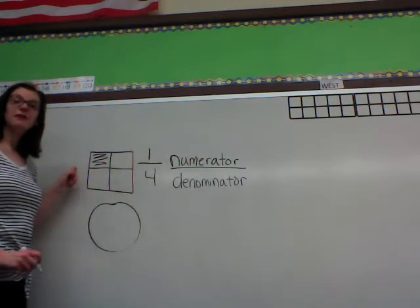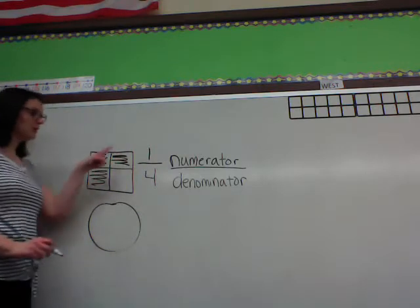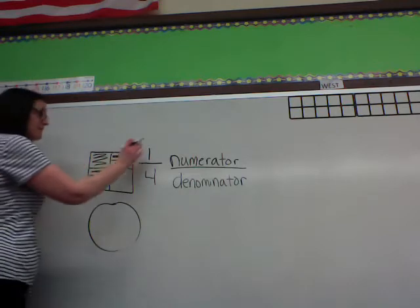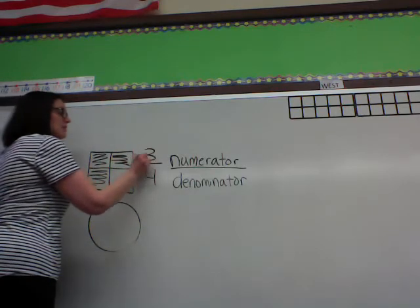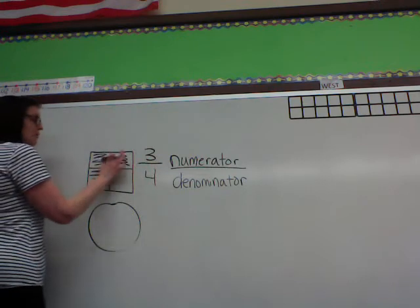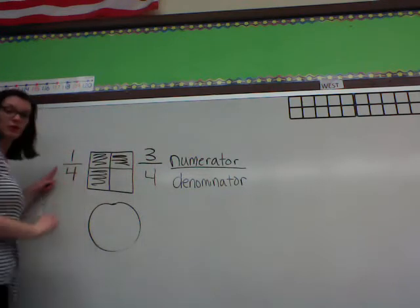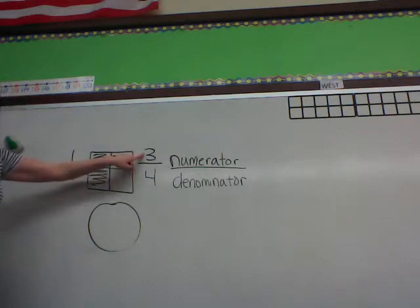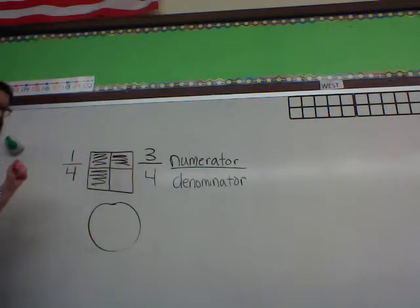But if I go ahead and color in two more, what number is going to be my numerator? Three. So I can either have one fourth, or three fourths — it depends how many pieces of my square are shaded in.